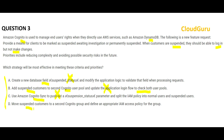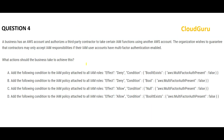Option D says move the suspended customers into a second Cognito group. You will not keep them in the first group — all suspended customers go into the second group only, and then you define an appropriate IAM policy for that group. This is the correct approach. You have two groups: the first group who can make changes, and the suspended user group who cannot. This is my final answer.